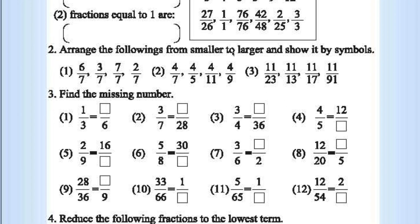Arrange the following from smaller to larger and show it by symbols. The denominator is common — it is 7. 2 by 7 is least. Why? Because 2 is less than 3, 3 is less than 6, and 6 is less than 7. So the order is: 2 by 7, 3 by 7, 6 by 7, and 7 by 7.